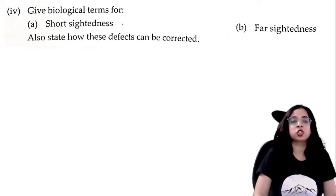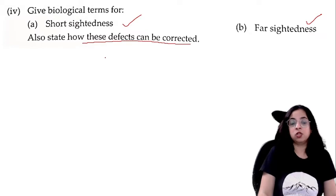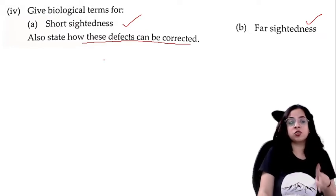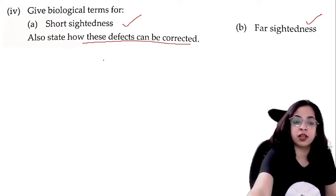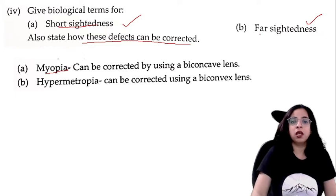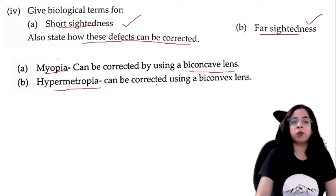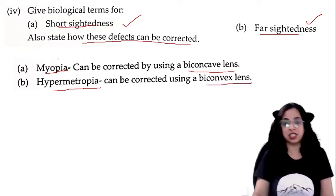Give biological terms for short-sightedness and far-sightedness, and state how these defects can be corrected. The biological name for short-sightedness is myopia and for far-sightedness is hypermetropia. Myopia can be corrected by using a bi-concave lens and hypermetropia can be corrected by using a bi-convex lens.